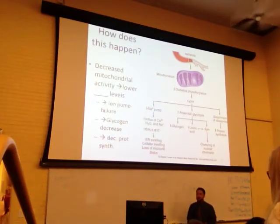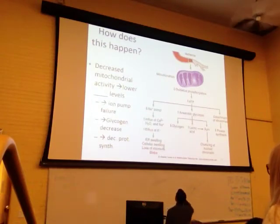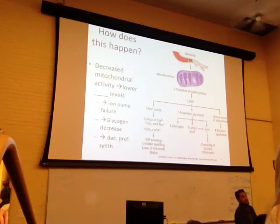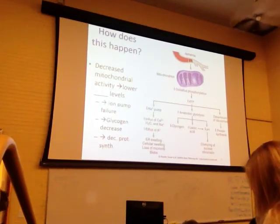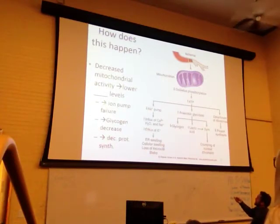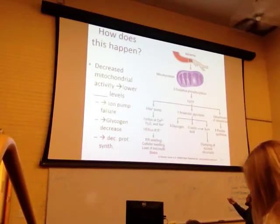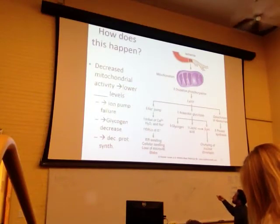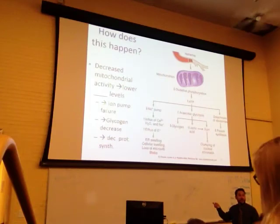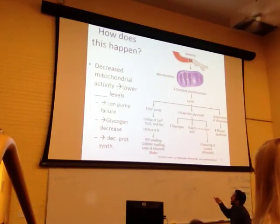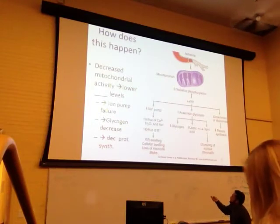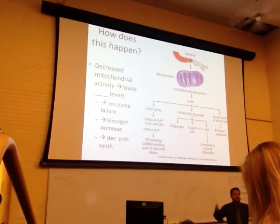If you lower ATP, you compromise the sodium-potassium ATPase pump, because it needs ATP to run. If you compromise the sodium-potassium pump, you get an influx of calcium and sodium and you lose potassium. This ionic imbalance then causes swelling of the cell. Meanwhile, the cell doesn't just give up — it uses glycolytic pathways, converting glycogen to glucose and running it through glycolysis to generate small amounts of ATP in a final survival effort.